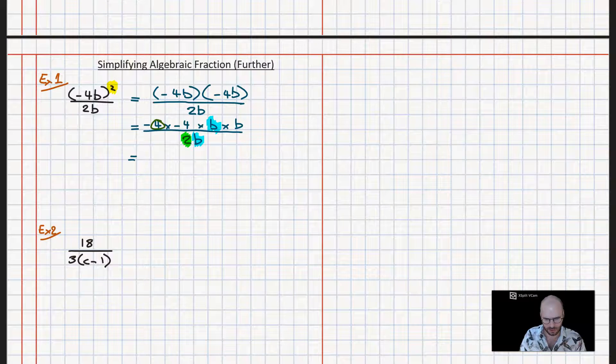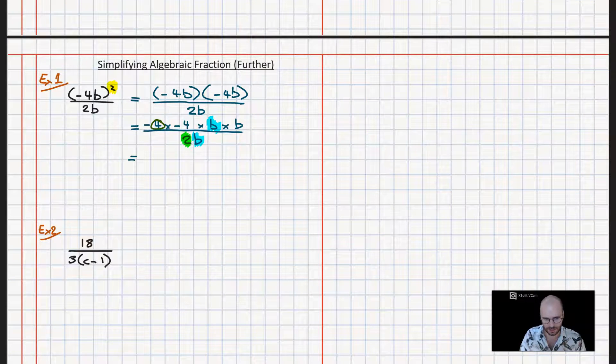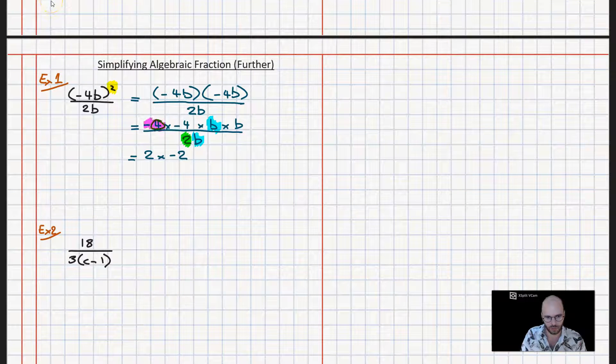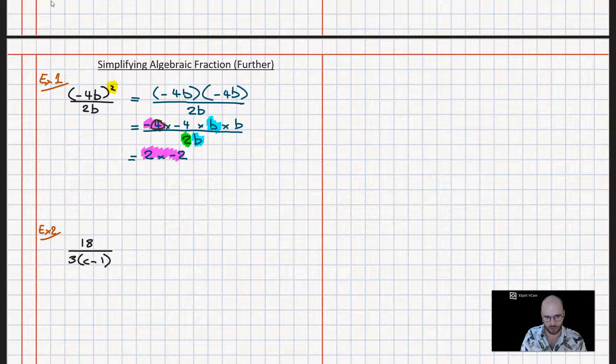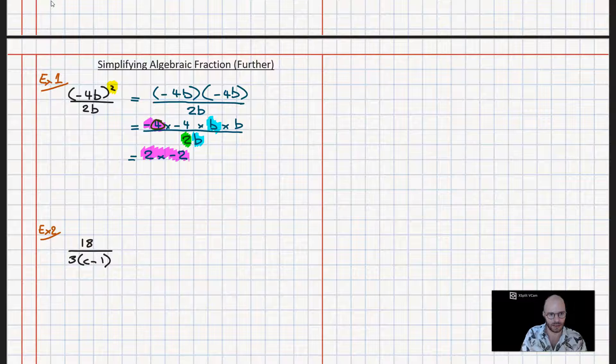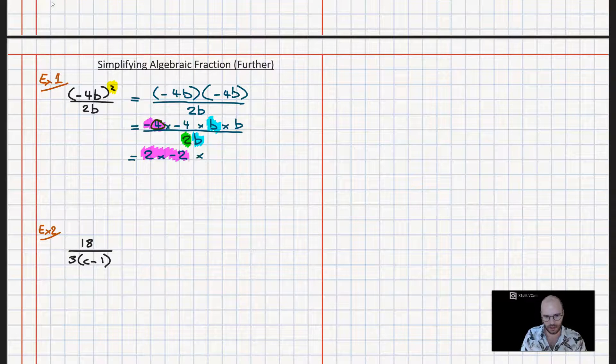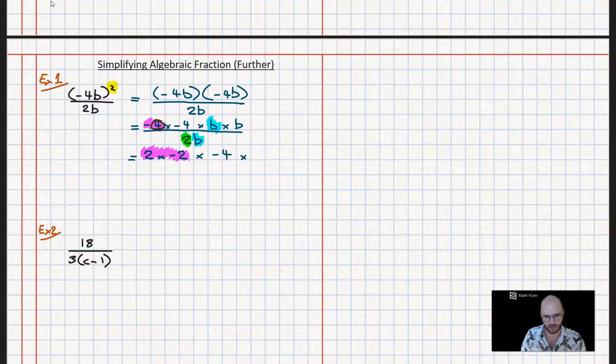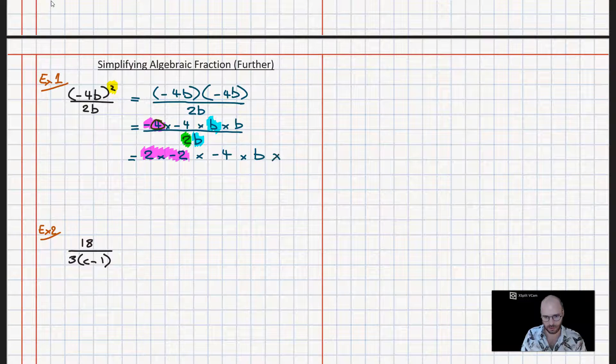Now what that's going to look like is we're going to get a 2 times negative 2, so that's our minus 4 factors right there. Then I'm just going to not worry about factorizing the second minus 4 and just say it's minus 4 times b times b. Down here we have 2 times b.